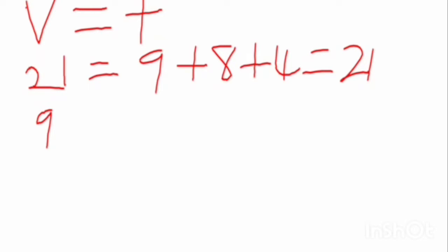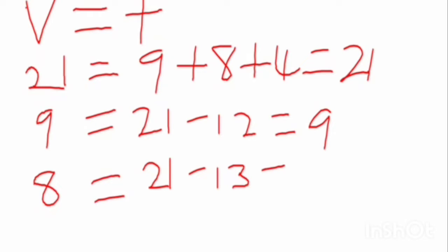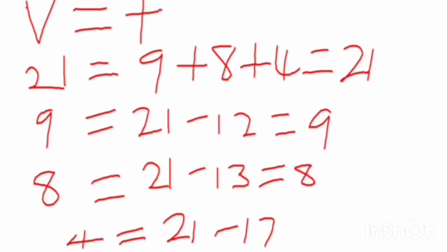If 9 is missing, then you subtract the sum of 8 and 4, which is 12, from 21, to get 9. If 8 is not given, then subtract the sum of 9 and 4, which is 13, from 21, and that will give you 8. If 4 is missing, then subtract the sum of 9 and 8, which is 17, from 21, and that will give you 4.